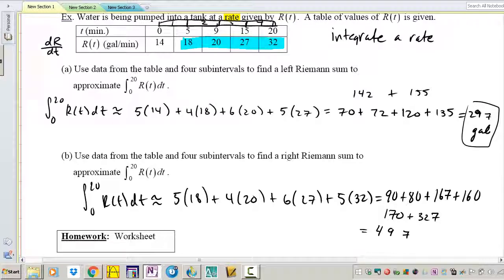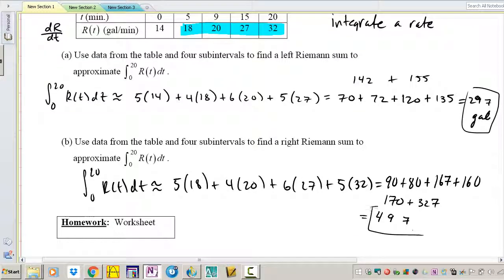Anyways, I'll leave you guys with the computations. This is what I got with a calculator. This is gallons, so maybe it's right, maybe it's not. Maybe the true area is in between 297 and 497. I'll leave you guys with that, but that is how you do the right Riemann sum.